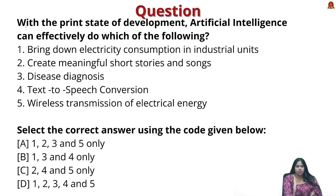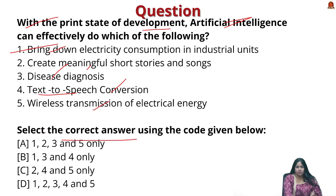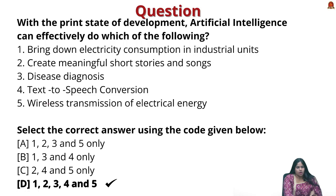Final prelims question on AI: With the present state of development, artificial intelligence can effectively do which of the following? (1) Bring down electricity consumption in industrial units; (2) Create meaningful short stories and songs; (3) Disease diagnosis and text-to-speech conversion; (4) Wireless transmission of electrical energy. The correct answer is option D — all statements 1, 2, 3, 4, and 5 are correct, as AI has vast uses.